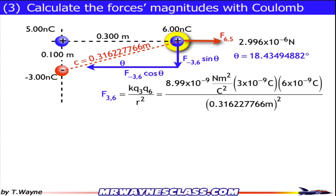So F36, KQ3Q6 over R squared, putting in my numbers, and also noting that the distance is 0.316, not 0.3, not 0.1, but the diagonal distance between 3 and 6. So when I do all that, I get my answer of 1.6182 times 10 to the negative 6 Newtons.